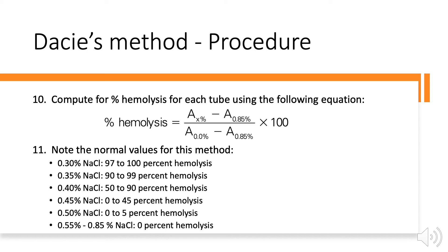Note the normal values for this method. At 0.3% sodium chloride, there should be 97–100% hemolysis. At 0.35%, there should be 90–99% hemolysis. At 0.40%, there should be 50–90% hemolysis. At 0.45%, there should be 0–45% hemolysis. At 0.50% NaCl, there should be 0–5% hemolysis. And at 0.55% to 0.85% NaCl, there should be no hemolysis.